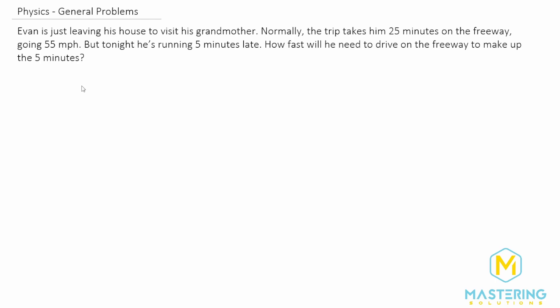In order to do that, we're going to use the velocity equation, which is velocity equals the change in distance over the change in time. They tell us that his velocity when he's going initially, or normally when he's not late, is 55 miles per hour, and that time usually takes him 25 minutes.